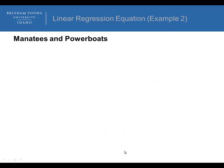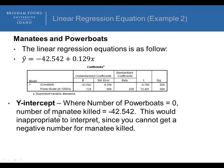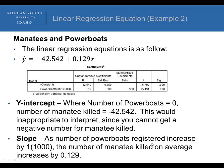Now the manatee and powerboats example. The linear regression equation gives us our y-intercept and our slope. Stop the video and figure out how you would interpret the y-intercept and the slope. The y-intercept: since the number of powerboats is 0, the number of manatees killed is negative — that can't happen, so it's inappropriate to interpret. But the slope we can interpret: as the number of powerboats registered increases by 1 (which represents 1,000 powerboats), the number of manatees killed on average increases by 0.129.